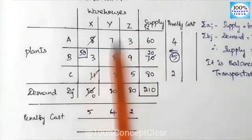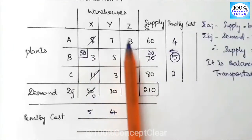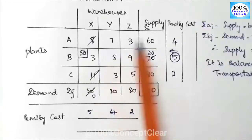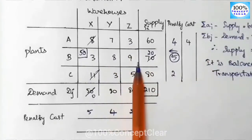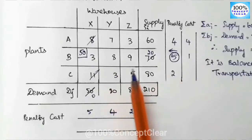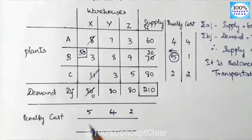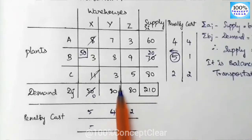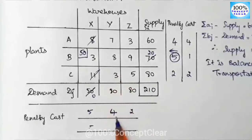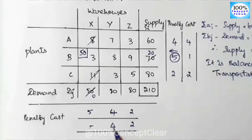Now for the second allocation. In the first row: 7 minus 3 equals 4. Second row: 9 minus 8 equals 1. Third row: 5 minus 3 equals 2. Column is 0 — cancelled. We add the penalty values: 4, 1, 2, and column penalties 4 and 2. The highest value is 4 — but we have a tie between two 4s.